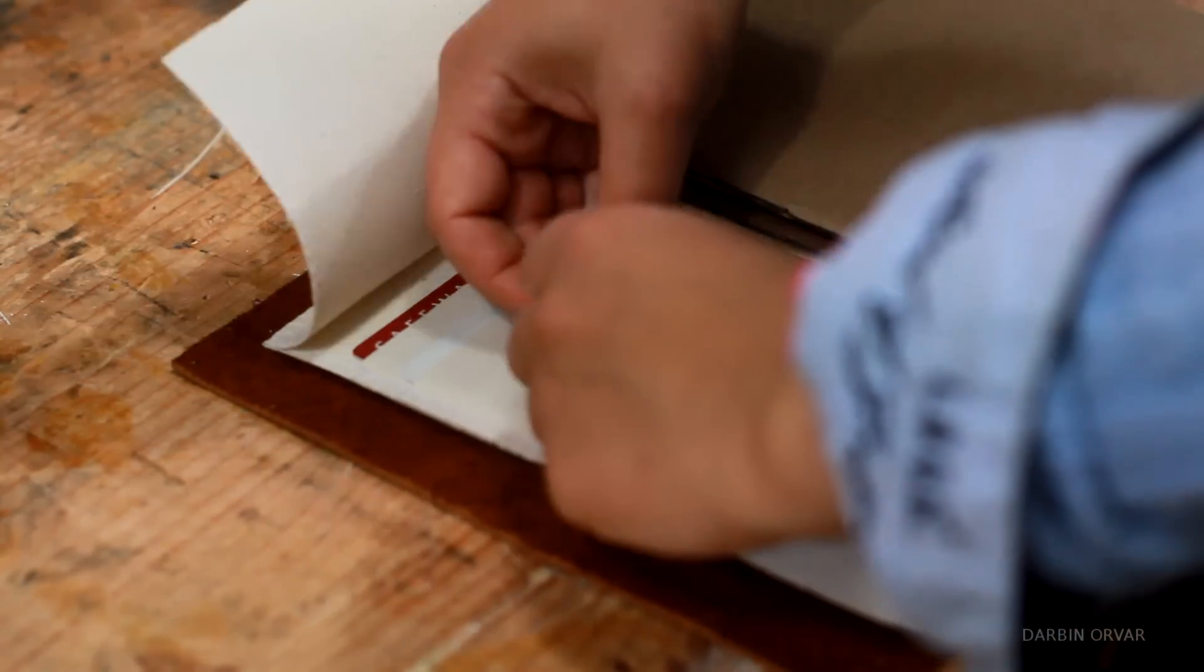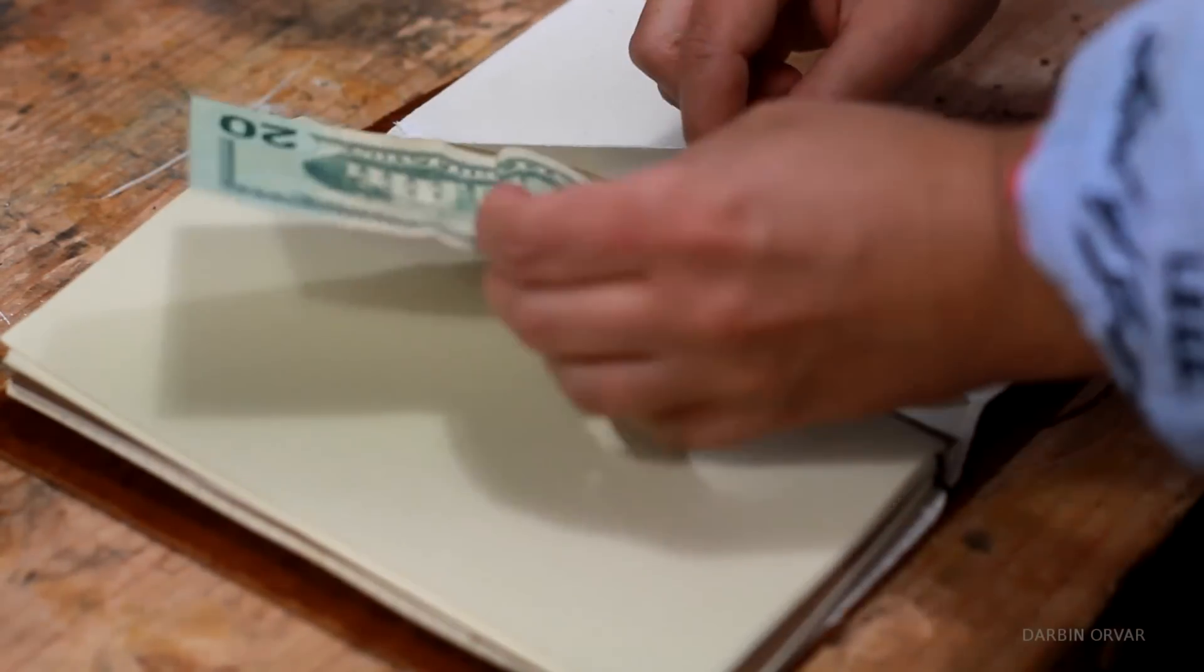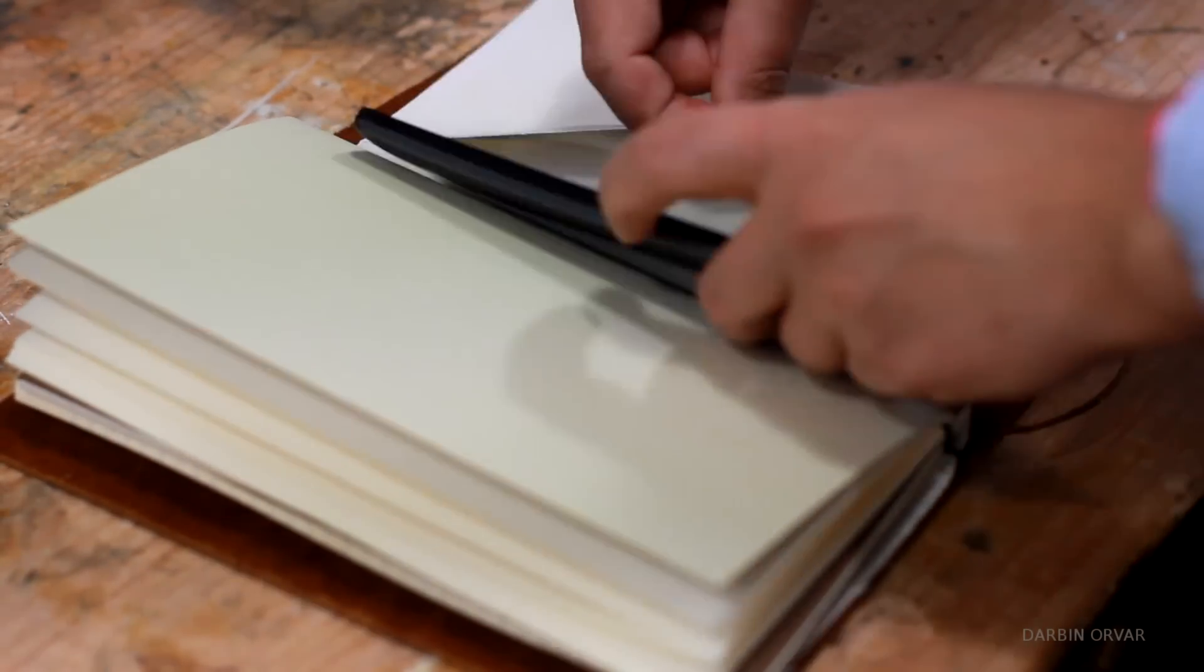And then that slips into the Midori book really easily. And you can use these pockets for receipts, money, your phone or whatever.